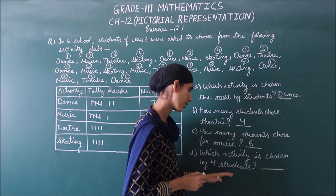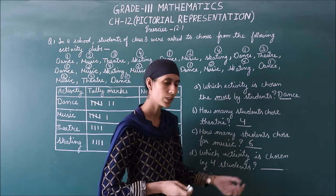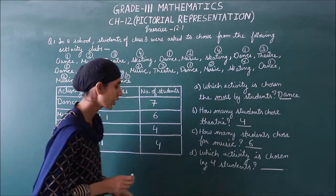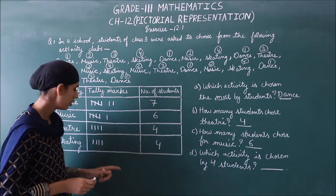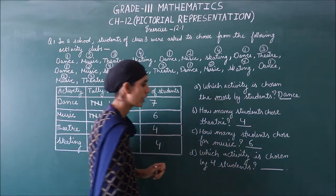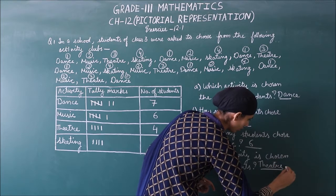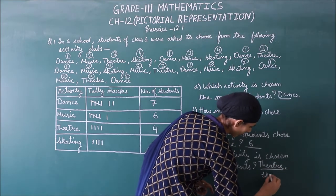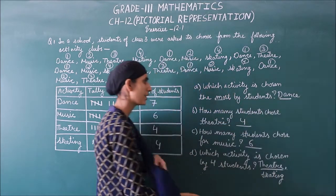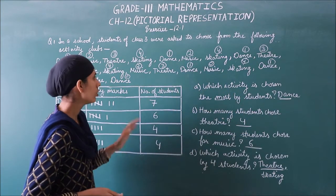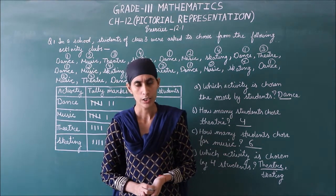Next part: which activity is chosen by 4 students? We check and find there are 2 activities that have 4 students each. Those are theater and skating. So we write both names: Theater and Skating, because both activities have 4 students each.